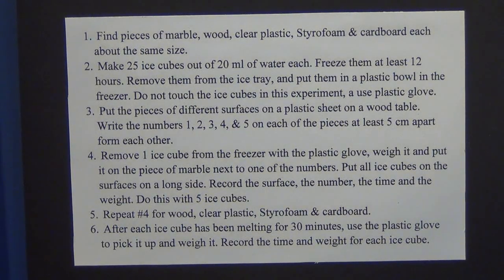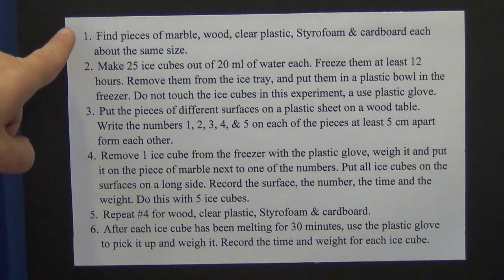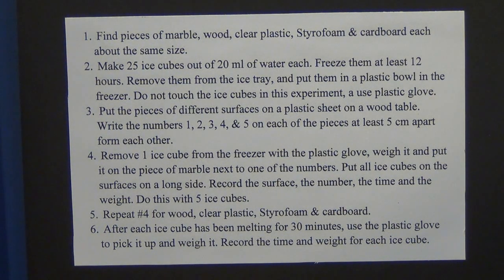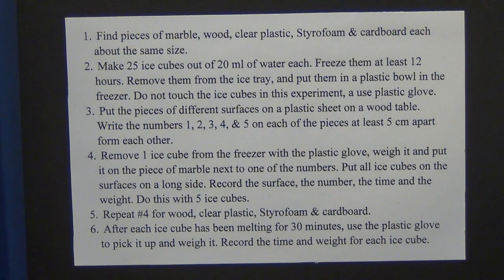The first example procedure was for the question: how fast will ice melt on different surfaces? The procedure was: first, find pieces of marble, wood, clear plastic, styrofoam, and cardboard, each about the same size. Two, make 25 ice cubes out of 20 milliliters of water each. Freeze them at least 12 hours. Remove them from the ice tray and put them in a plastic bowl in the freezer.